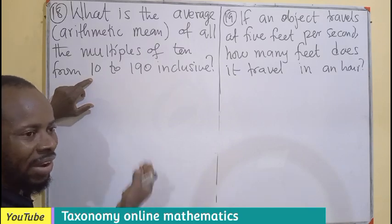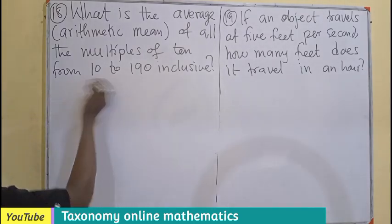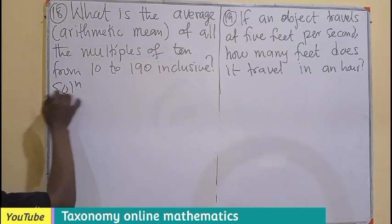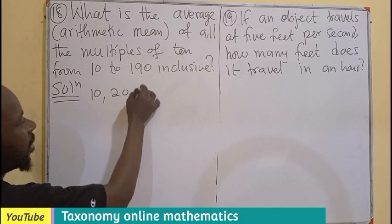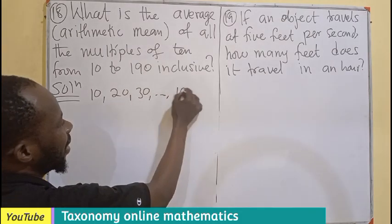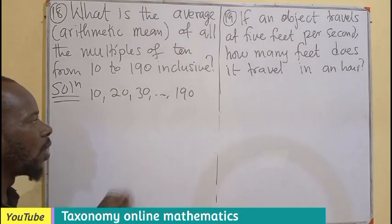This will just generate a sequence for us. So if I want to represent this, I can have 10, 20, 30, then the last number I'm expecting to be 190.